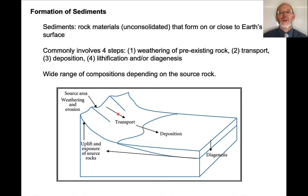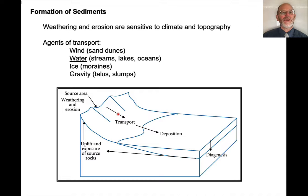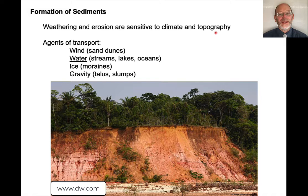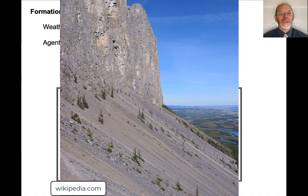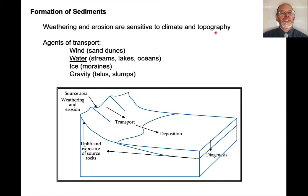You can see a whole range of compositions depending on what the source rock is. The process also depends very sensitively on climate and topography. You'll see very different sediments forming in, say, the Amazon rainforest — which is hot, wet, and has very little topography — as opposed to an alpine system at high elevation where it's cold with not much precipitation and not many plants. Several different possible agents of transport: wind can form sand dunes, ice can form moraines, gravity can form talus fields and slumps, but most sediments are transported and deposited by water — either streams, lakes, or the ocean.